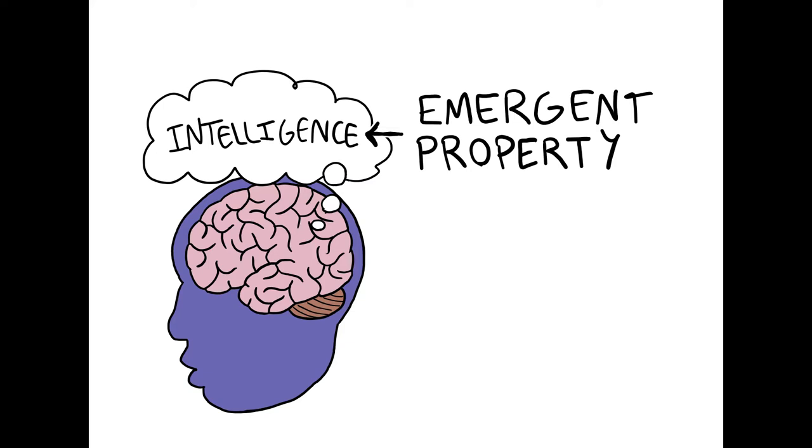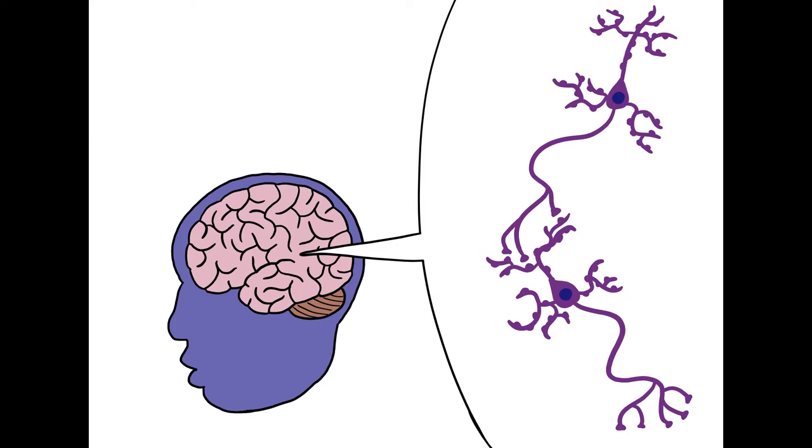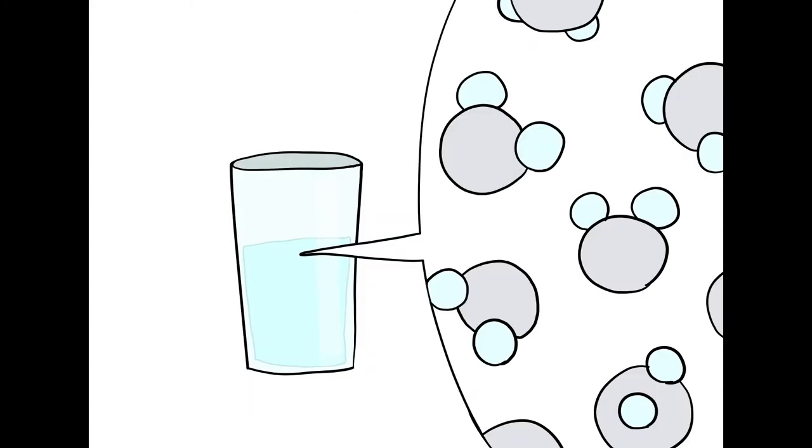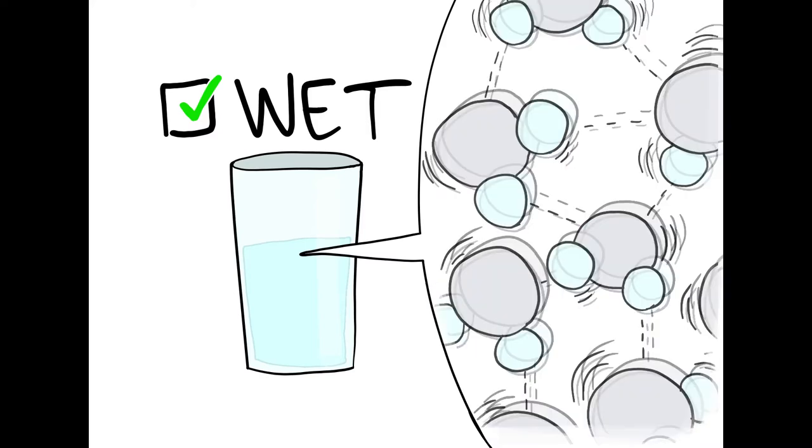Emergence is a term used to describe complex systems that are made up of simple constituent parts. It's a fancy way of saying this thing is very complicated and I don't really understand how it works. In the case of the brain, the brain cells are the simple constituent parts and the emergent property is its ability to acquire, process, and use information. Another example of emergence is water. The constituent parts of water are water molecules, and the emergent property is wetness. A single water molecule isn't wet, but wetness emerges from the physical and chemical interactions of those molecules in a cup of water.